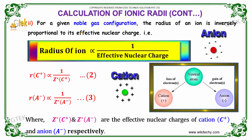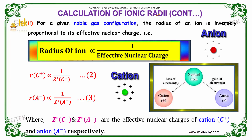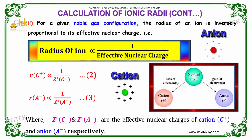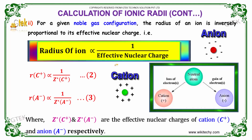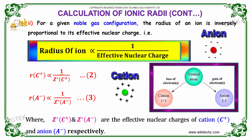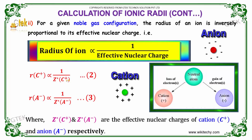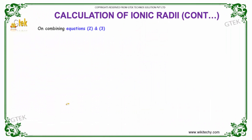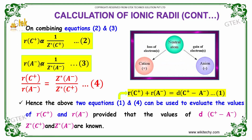The second important assumption for the calculation of ionic radii, based on Linus Pauling's research: for a given noble gas configuration, the radius of an ion is inversely proportional to its effective nuclear charge. So, the radius of the cation is proportional to one over the nuclear charge of the cation, and similarly, the radius of the anion is inversely proportional to the effective nuclear charge of the anion. Combining these two equations, the ratio of the radius of the cation to the radius of the anion equals the effective nuclear charge of the anion divided by the effective nuclear charge of the cation.